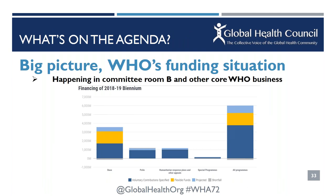Looking at the agenda, in Committee Room B this year, the biggest topic aside from some reorganization details is WHO's funding situation. Many are aware that WHO is working on a massive resource mobilization effort as it looks towards its future. The current 2018–2019 biennium budget is an illustrative example. Polio funding is a major element — as polio eradication advances, the question of what happens to that funding, which has supported lots of different cross-cutting activities at WHO, is an important one.